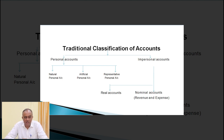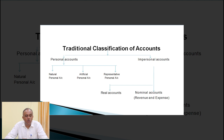Another is the representative person. Representative person means any amount payable to others or any amount receivable from others, which is known as outstanding salary or outstanding rent, prepaid salaries or prepaid rent, and so on. It represents the person for a payable or receivable sum of money — that is known as a representative person.